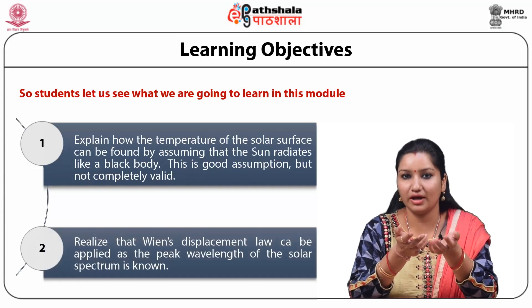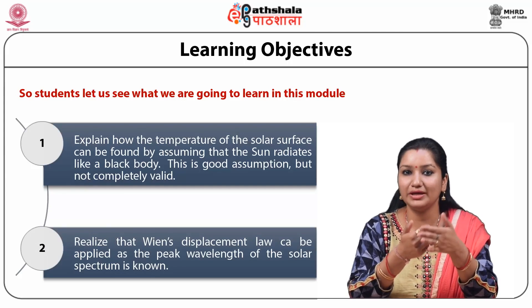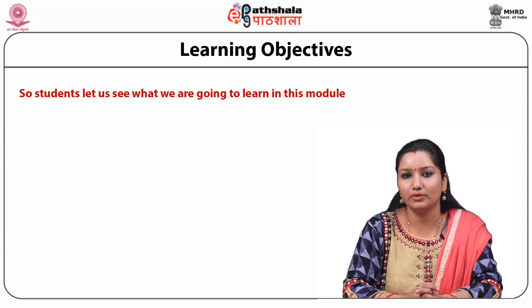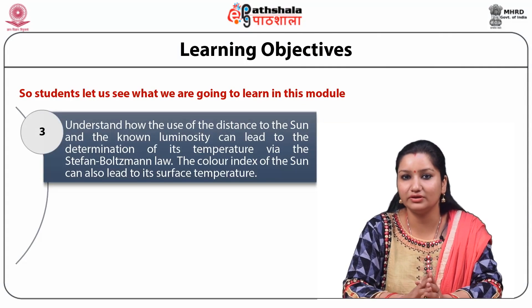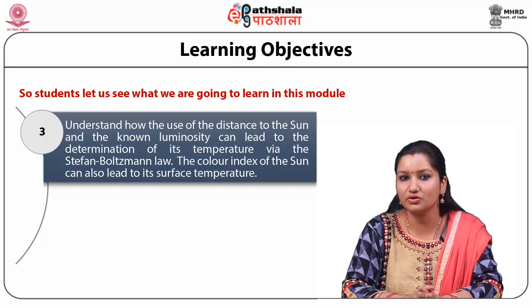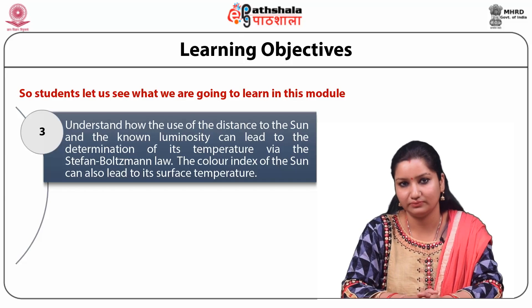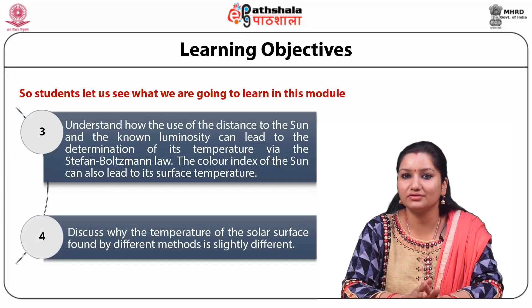Secondly, you will realize that Wien's displacement law can be applied as the peak wavelength of the solar spectrum is known. Thirdly, you will understand how the use of the distance to the Sun and the known luminosity can lead to the determination of its temperature via the Stefan-Boltzmann law. The color index of the Sun can also lead to its surface temperature. Then you will discuss why the temperature of the solar surface found by different methods is slightly different.